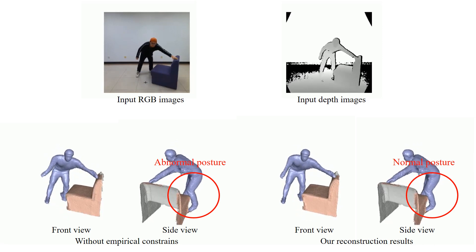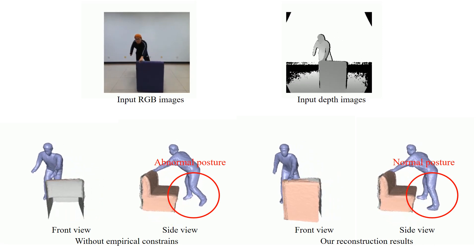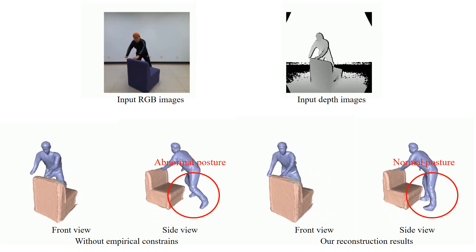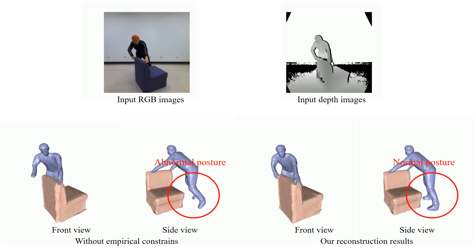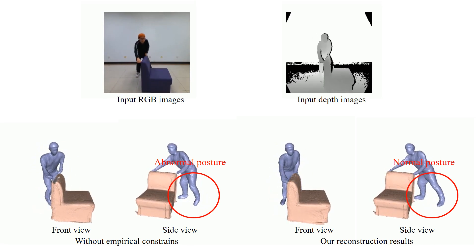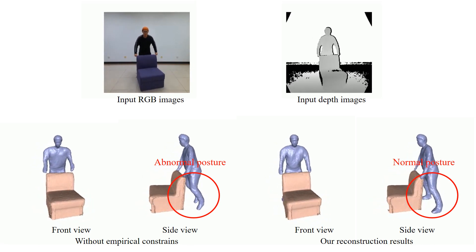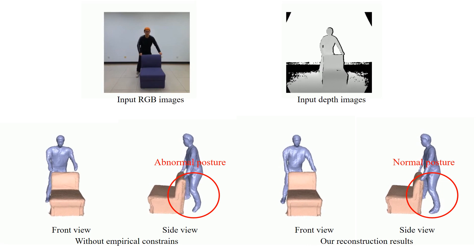Data-driven terms, including an interaction pose prior and a temporal motion prediction prior, help maintain natural motions, especially for those regions under severe human-object occlusion.